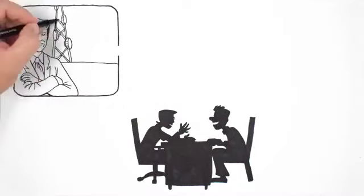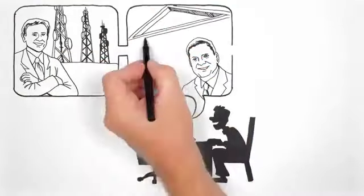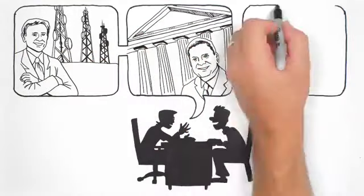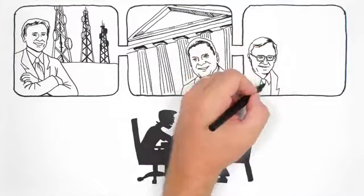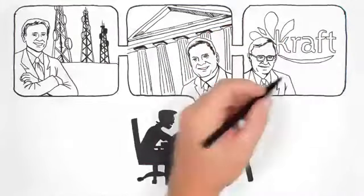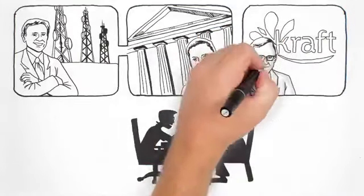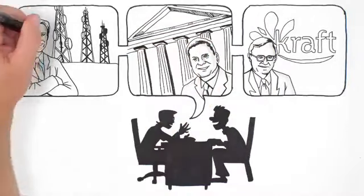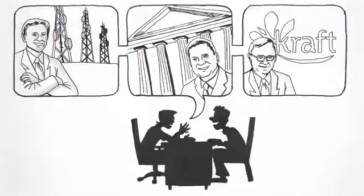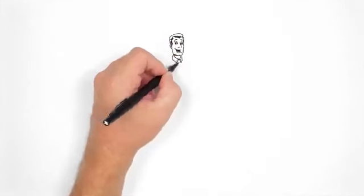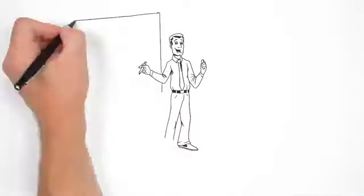One had retired in his 40s from the telecommunications industry, one had been a rising star in financial services, and one had retired as vice president of strategy for Kraft Foods. The fact that these highly successful businessmen had chosen network marketing as the distribution model for Acia made this company very, very unique.